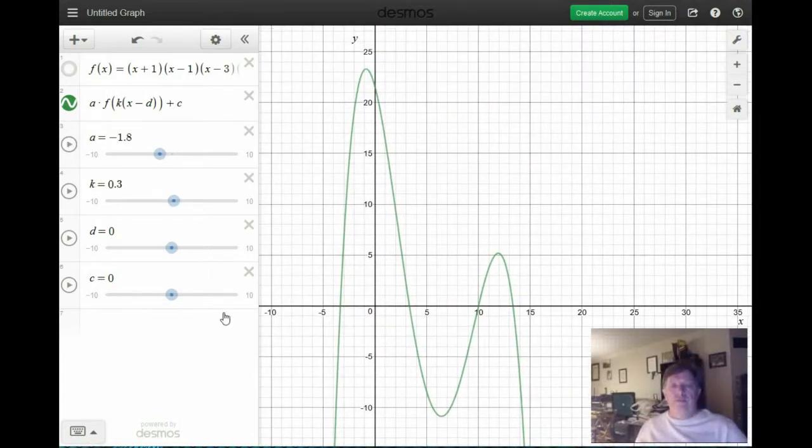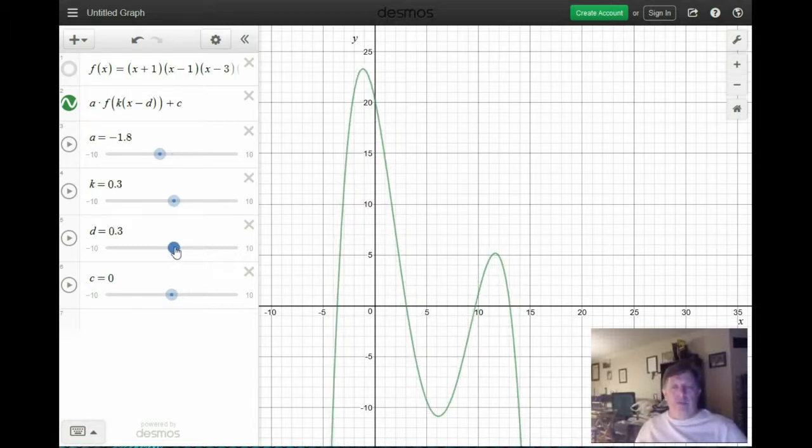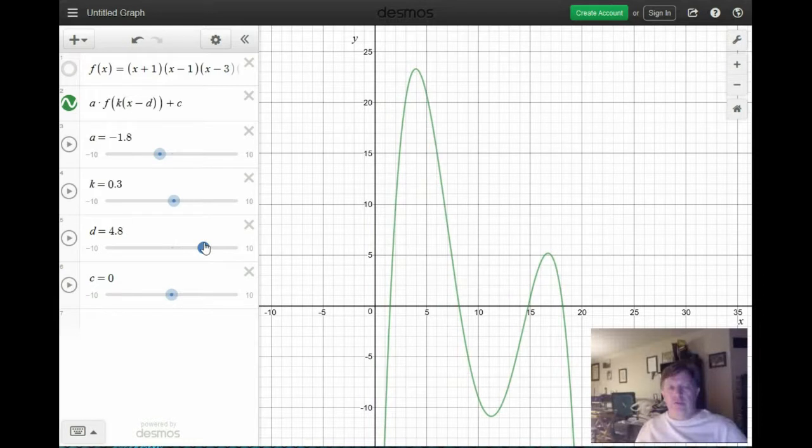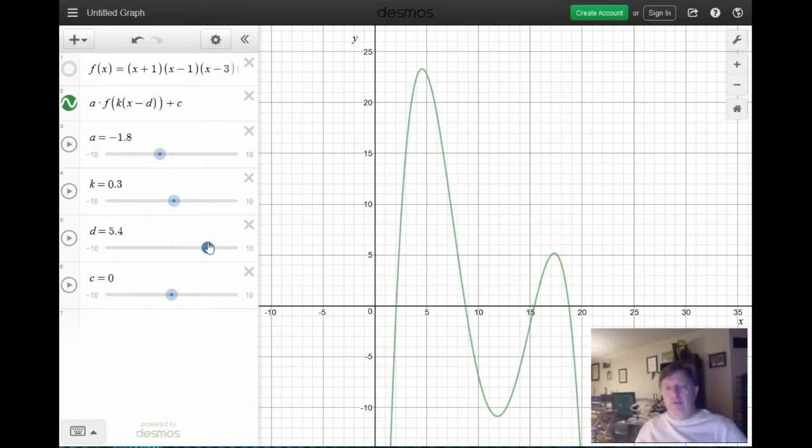Let's move d over so that this x-intercept now moves all the way to the positive side. And that won't be too hard to do. So we'll just move d over. So d is now positive 4.8. And you can see I'm able to make d into some number that gives me a good bunch of x-intercepts.